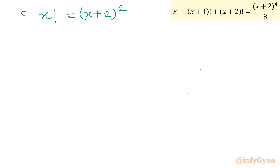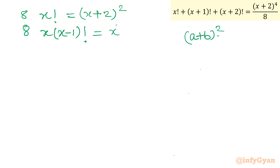We apply the recursive formula again on the left side: 8 times x times (x−1)! equals (x+2)^2. Now we expand the right side using the algebraic identity (a+b)^2 = a^2 + 2ab + b^2, giving x^2 + 4x + 4.